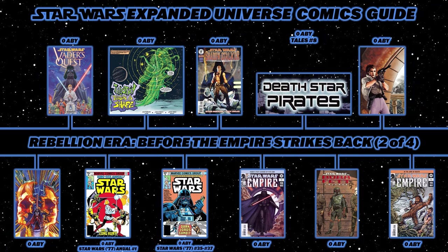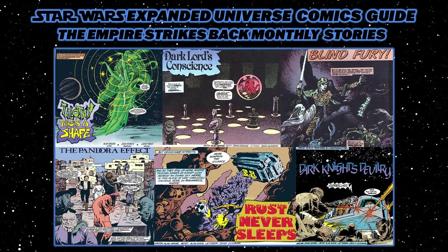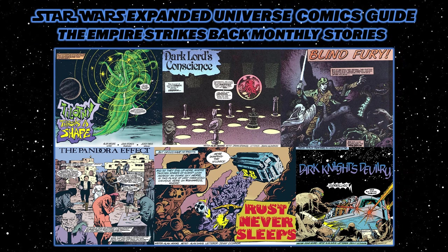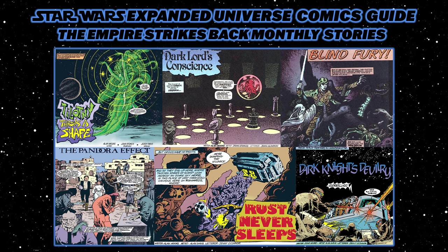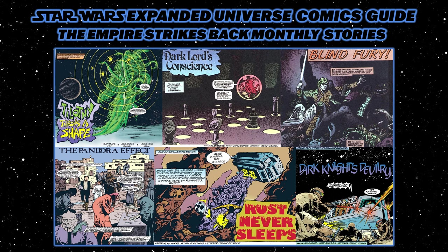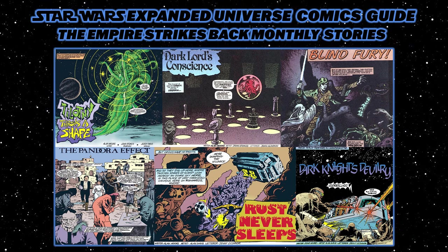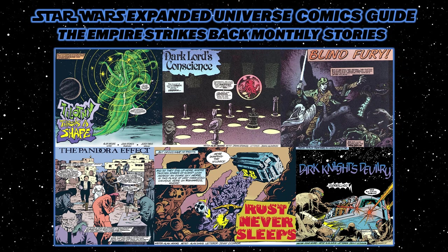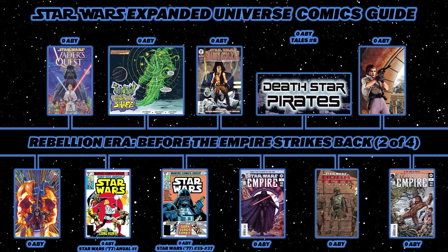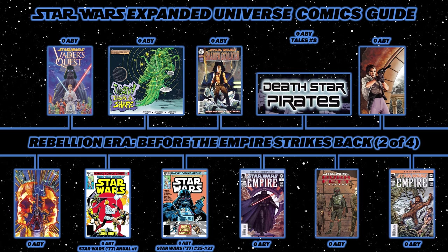Then read these stories from the UK magazine The Empire Strikes Back Monthly: Tolotan Throws a Shape (issue 154, written by comic legend Alan Moore), Dark Lord's Conscience, Blind Fury (issue 159), The Pandora Effect (issue 151), Rust Never Sleeps (issue 156), and Dark Knight's Devilry (issue 153). Then back to Marvel 1977 issues 35 through 37.